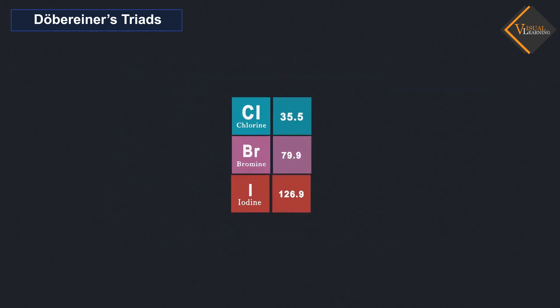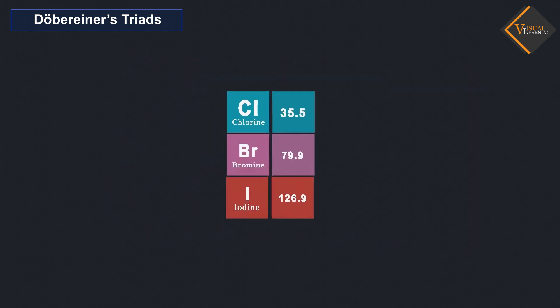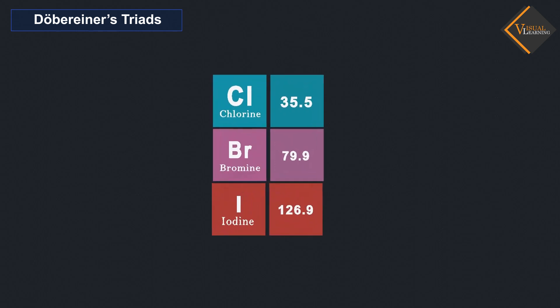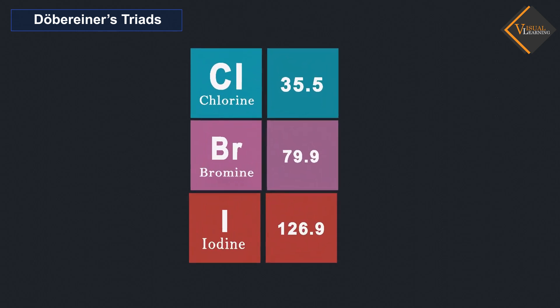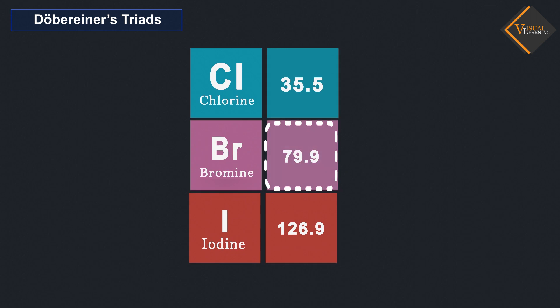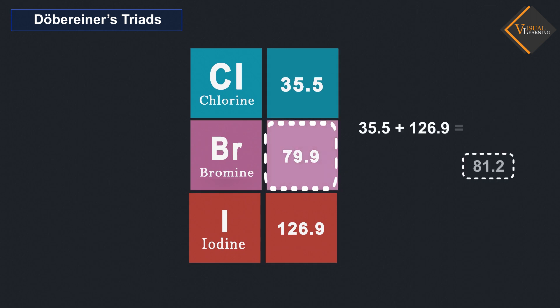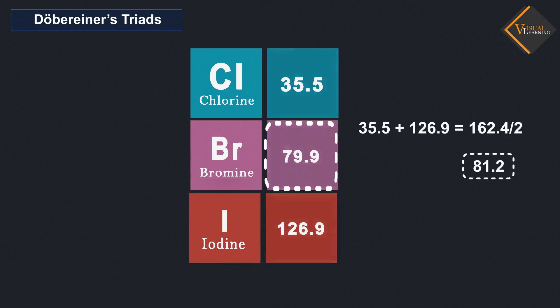Dobereiner showed that when the three elements in a triad were written in the order of increasing atomic masses, the atomic mass of the middle element was roughly the average of the atomic masses of the other two elements.